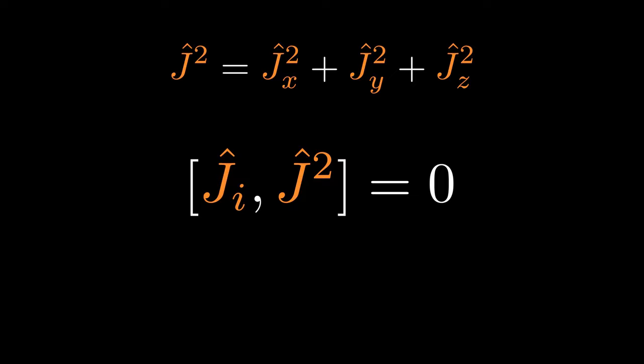J² is the total angular momentum squared, which is also Jx² + Jy² + Jz². When the commutator vanishes, both observables represented by the operators can simultaneously be measured precisely. In this case, the total angular momentum and the angular momentum along one axis can be simultaneously measured precisely. This is nothing surprising to us, but what is surprising is this statement.